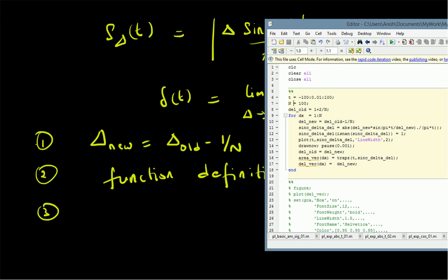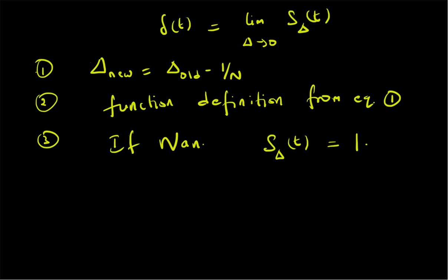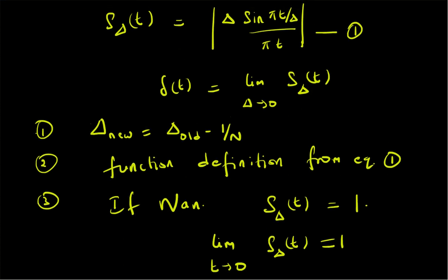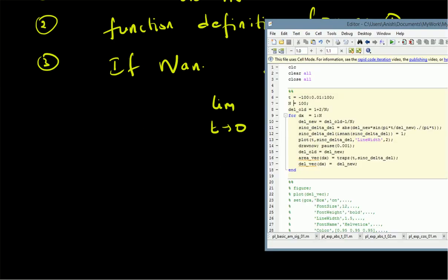Step three: we check for any NaN (not-a-number) values. If there are NaNs, we set s_delta(t) = 1 at those locations. This comes from the fact that as t→0, s_delta(t) = 1, which is a fundamental limit identity. In MATLAB, computing the function at t=0 may yield 0/0, so we replace it with 1.